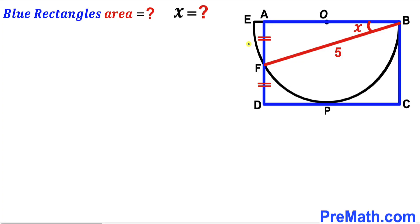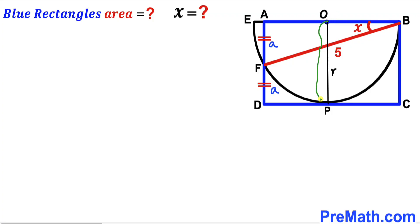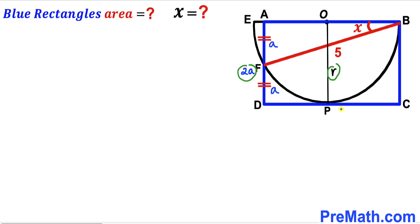I'm going to label segment AF as lowercase a, and segment DF is lowercase a as well. Now I'll connect center O with the point of tangency P. We can see that OP is the radius of the semi-circle — I'll call this radius lowercase r. Since segment OP equals segment AD, and AD equals a plus a, which is 2a, we conclude that radius r equals 2a.